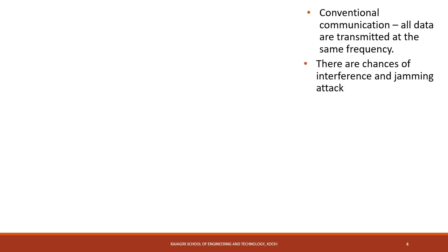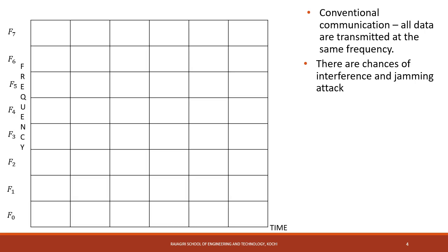In conventional communication systems, the entire data will be transmitted at a single frequency throughout time. In such cases, there are chances of interference and jamming, since the data is transmitted at the same frequency. So we go for Frequency Hopping Spread Spectrum, where we divide the entire time range into different slots and the data will be transmitted at a different frequency in each time slot. Therefore, a hopping pattern will be allotted.